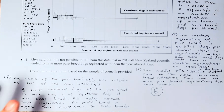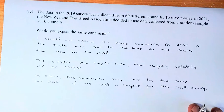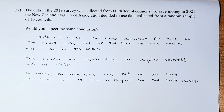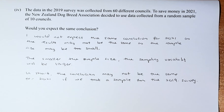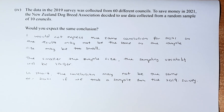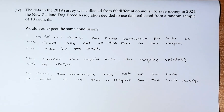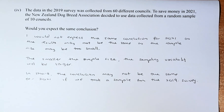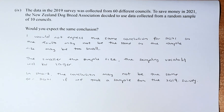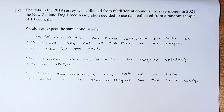There are two excellence questions in this paper. Now the last question is part 4. The question is: the data in the 2019 survey was collected from 60 different councils. To save money in 2021, the New Zealand Dog Breed Association decided to use data from a random sample of just 12 councils. Would you expect the same conclusion? The answer is no — I would not expect the same conclusion, as the sample size may be too small. The smaller the sample size, the larger the sampling variability. So the result will not be the same. If you can answer this, that's a merit.